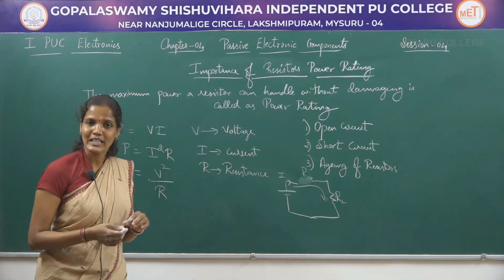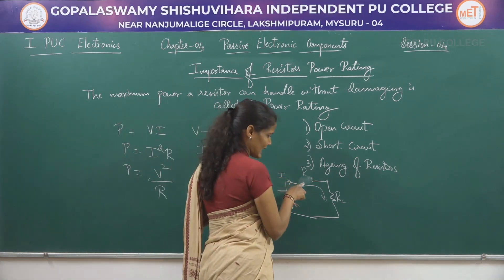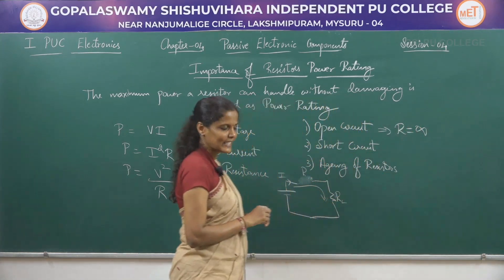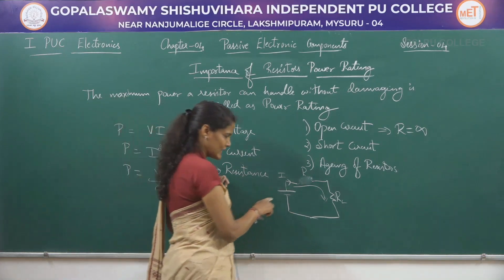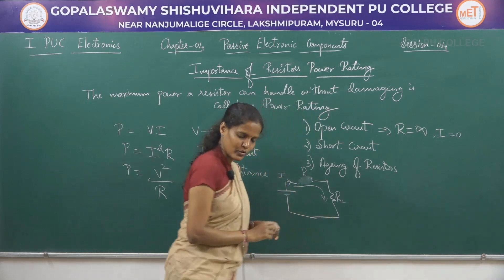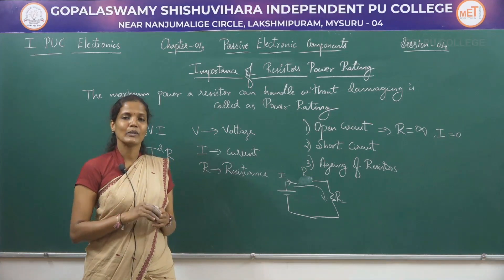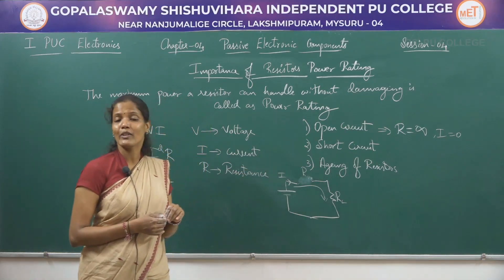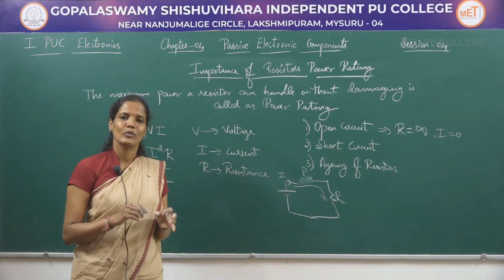In an open circuit, when a large current flows through a resistor, the resistor burns out by itself and opens the circuit. In an open circuit, the resistance will be very high — ideally equal to infinity. Only when resistance equals infinity will the current be unable to flow; that is, current equals zero in the case of an open circuit.